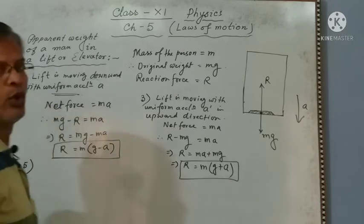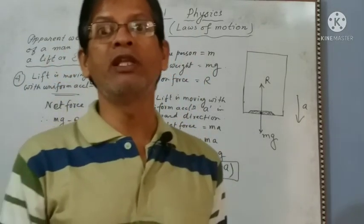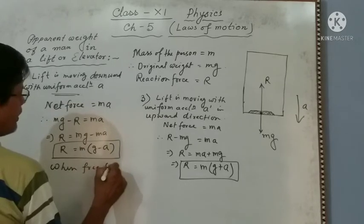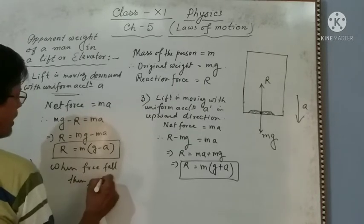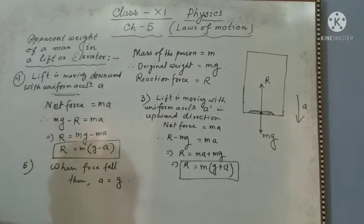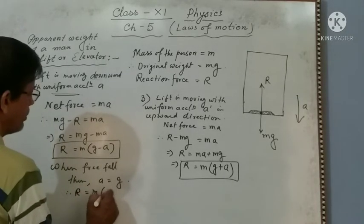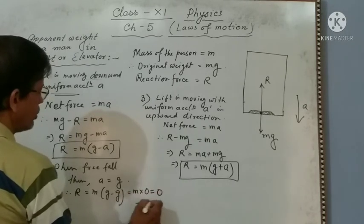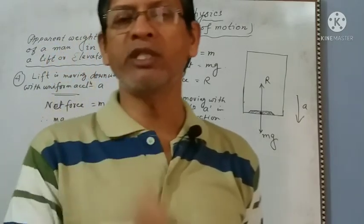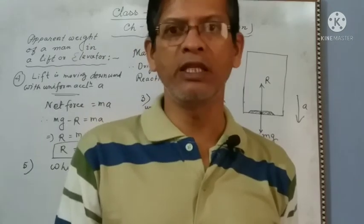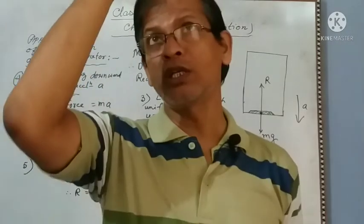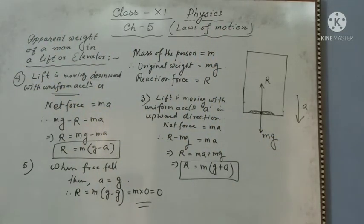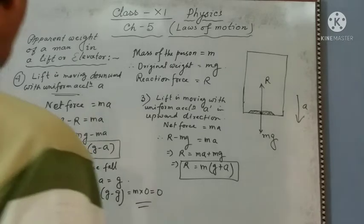Fifth case: when the lift is falling freely — free fall. In this case, A equals G. Therefore, R equals m(G minus A) equals m(G minus G) equals m times 0, which equals 0. So the person will feel weightless. The reading on the weighing machine will be zero — meaning the cord of the lift is cut and it is falling freely.